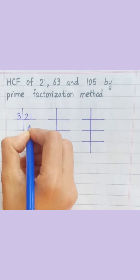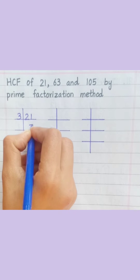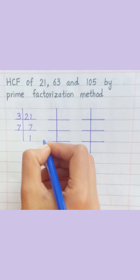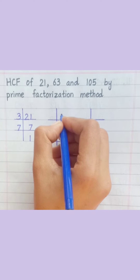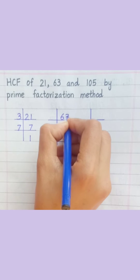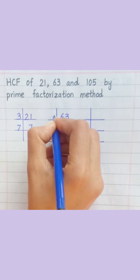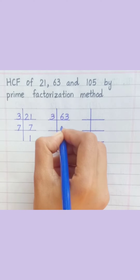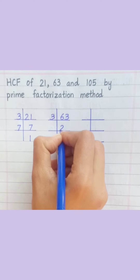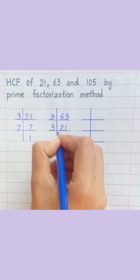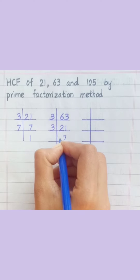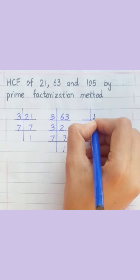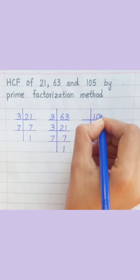Factorizing 21: 3 sevens are 21, 7 ones are 7. Factorizing 63: 3 twos are 6, 3 ones are 3, 3 sevens are 21, 7 ones are 7.